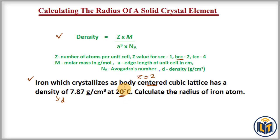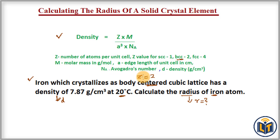The question asks us to calculate the radius of iron atoms — that is, we need to find R. Before we calculate the radius, we first need to know the length of the unit cell. Since the density is given and iron has a BCC structure giving us Z, we can apply the density formula to calculate the length of the unit cell, a.